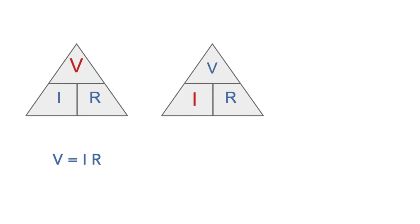If the current I is needed, then highlight this one. As the two other letters are one above the other, then the top one is divided by the bottom one. In other words, V divided by R.